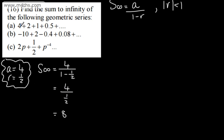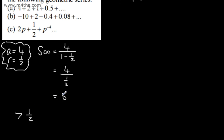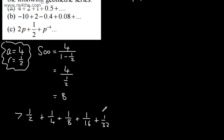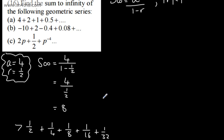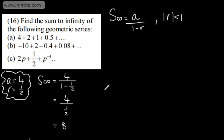After just four terms we're already at 7.5 — so how will it never exceed 8? Well, the next term is a quarter, then an eighth, then a sixteenth, then 1 over 32. These fractions get so small that the amount being added — like the bar of chocolate — is so insignificant that it will tend to 8, yet never quite reach it.